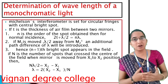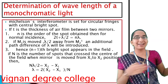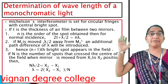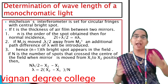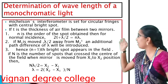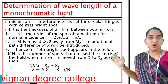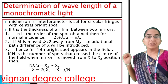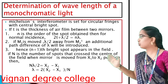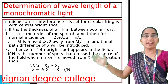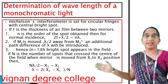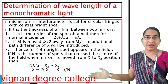If N is the number of spots that cross the center of the field when the mirror is moved from position X1 to X2, then the condition gives: Nλ/2 = X2 − X1.